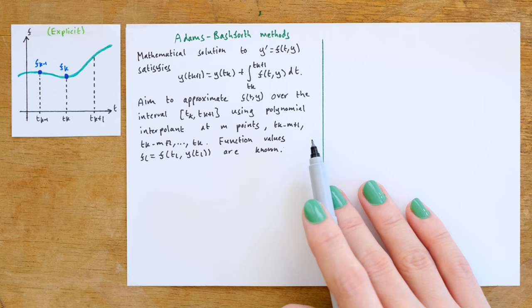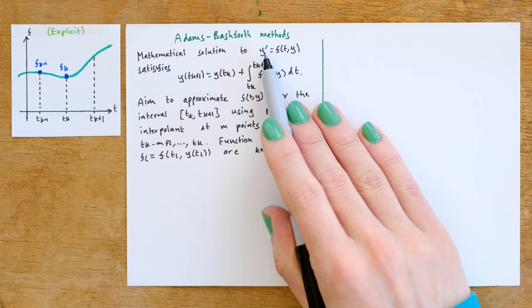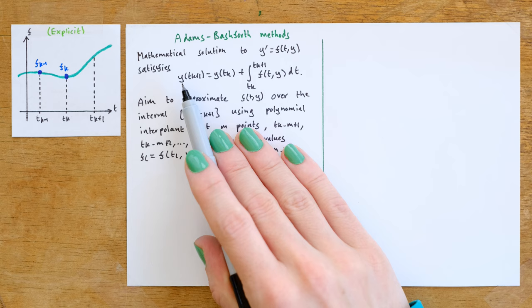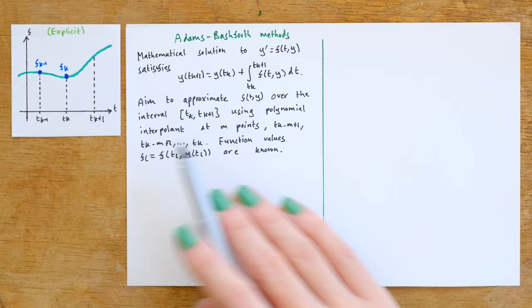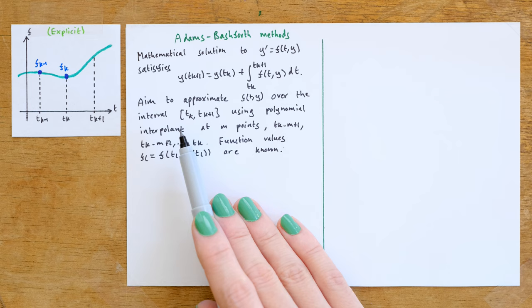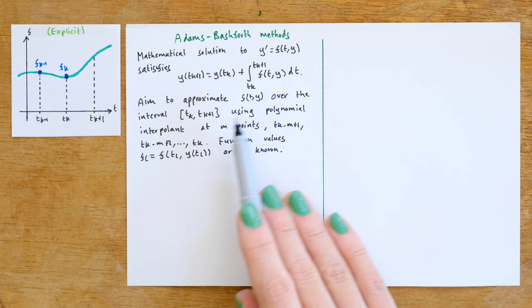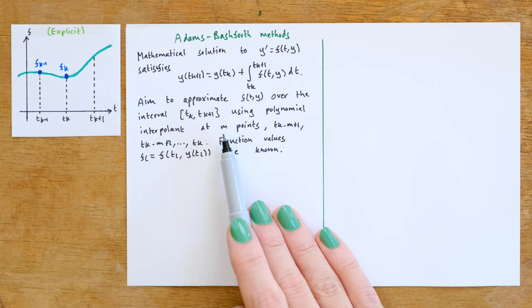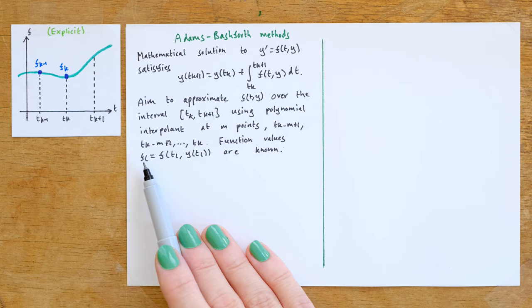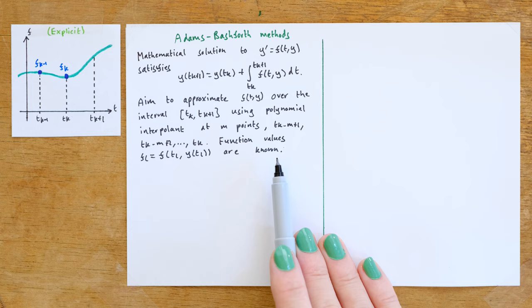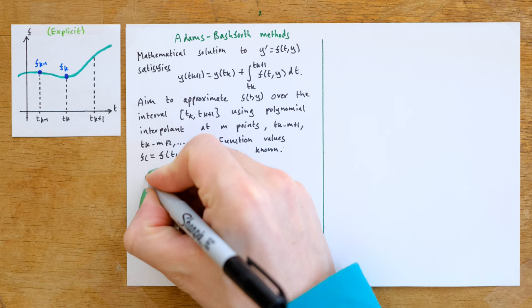Let's now look at deriving multi-step Adams-Bashforth methods. The starting point is to write our ODE y' = f(t, y) in integral form, where the mathematical solution y at t_{k+1} equals y at t_k plus the integral from t_k to t_{k+1} of f(t, y) dt. The Adams-Bashforth approach approximates f(t, y) over this interval using a polynomial interpolant at m points from t_{k-m+1} up to t_k, where the function values f_l = f(t_l, y(t_l)) are known.